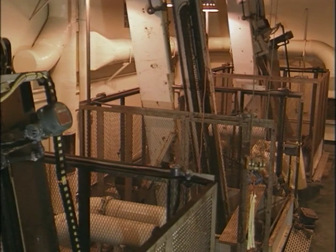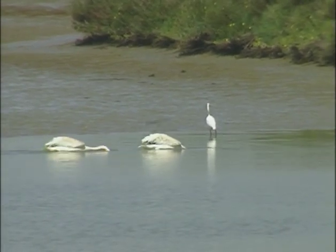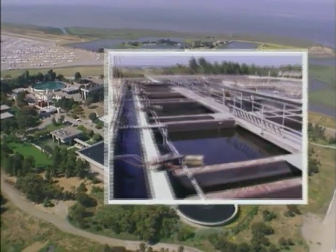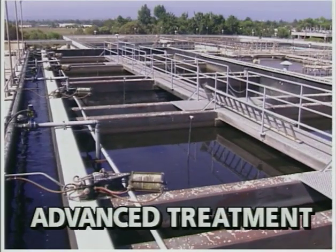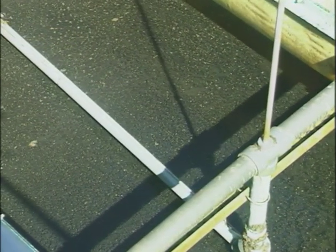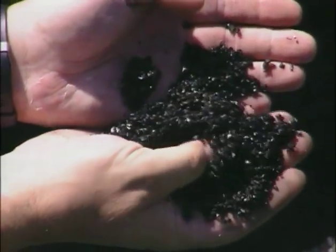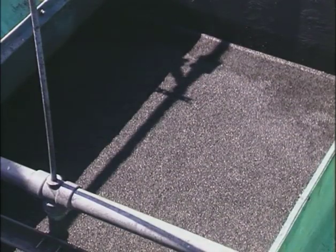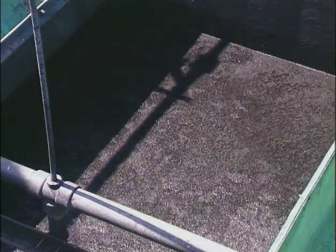In some places, primary and secondary treatment are enough to make the water clean enough to return to nature. But South San Francisco Bay is a delicate and fragile ecosystem. The Regional Water Quality Control Plant adds another filtering step — advanced treatment — before water is returned to the bay. Here, much smaller particles of waste are removed as the water passes through fine filters, a combination of sand and ground-up coal. This is similar to what happens in nature when water seeps into the ground and is filtered by small particles of soil.